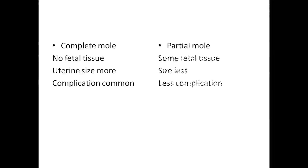The main differences between complete mole and partial mole: in complete mole there is no fetal tissue; in partial mole some fetal tissue is present. In complete mole, uterine size is large; in partial mole the size is less. Complete mole complications are common; partial mole has fewer complications. There is no focal villous swelling and focal trophoblastic hyperplasia usually involving the syncytiotrophoblast only in incomplete moles.